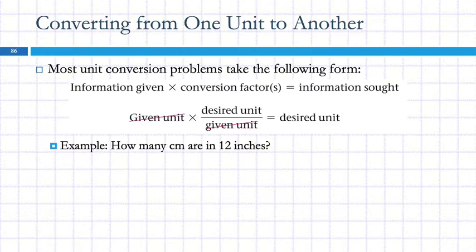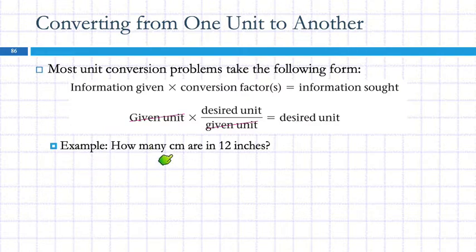Most of these problems take the same form: we're given some information, we use some conversion factors, and then we get the information we're asking for. So we have a given unit and a desired unit. Here's a simple example: how many centimeters are in 12 inches? The given unit is inches — it's the one with the number — and the desired unit is centimeters. I'm going to start with what I'm given and go to what I want.